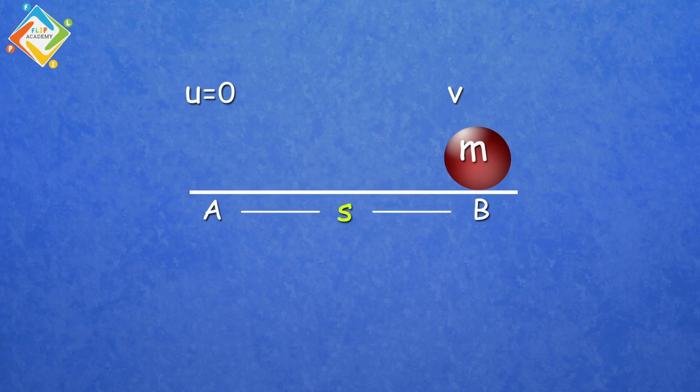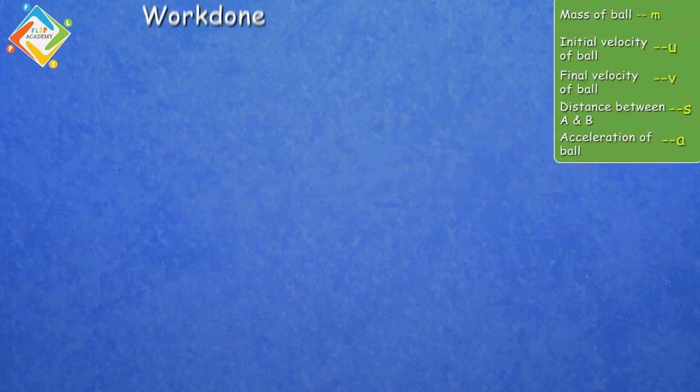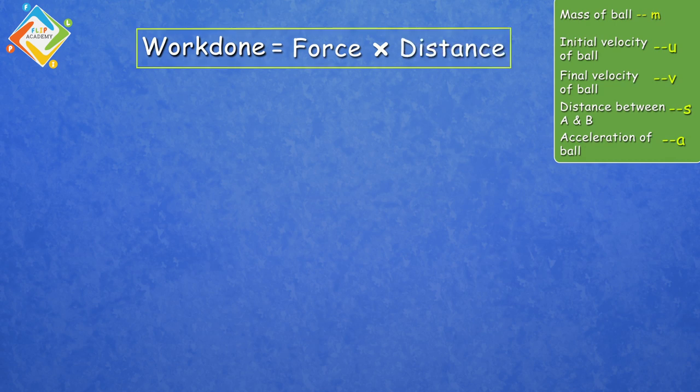As the velocity is continuously increasing, the acceleration is represented by small a. Now this ball has covered distance S. In this condition, it has done some work. The body has done some work. And what is the work formula? Force into distance. We represent the work with capital W, force with capital F, and distance with S.